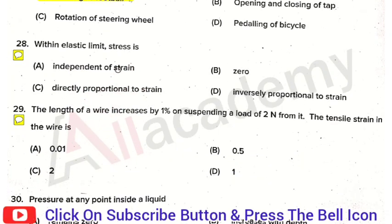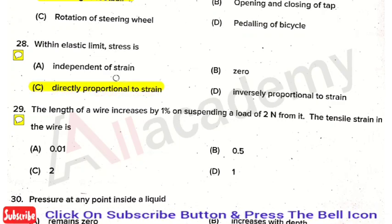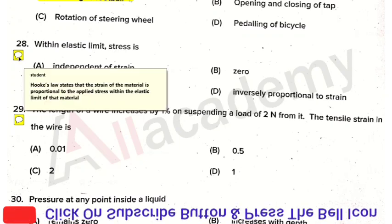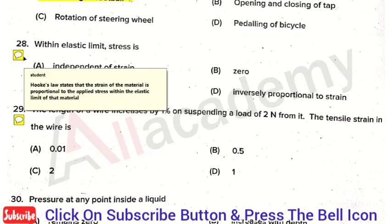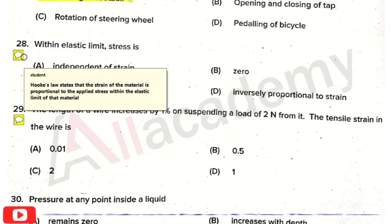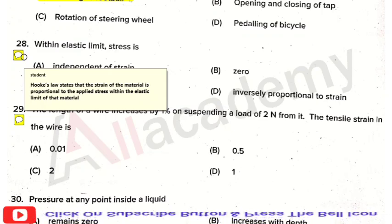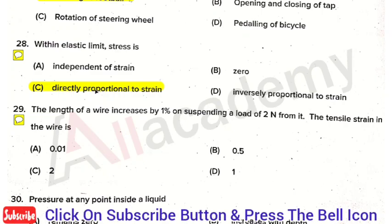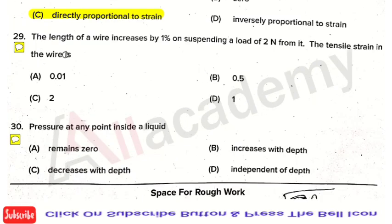The next question: within the elastic limit, the stress is — the right answer is option 3, that is directly proportional to strain. This is defined by Hooke's Law, which states that stress is directly proportional to strain within the elastic limit. So the right answer is option 3.